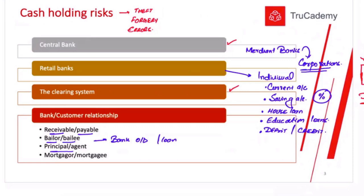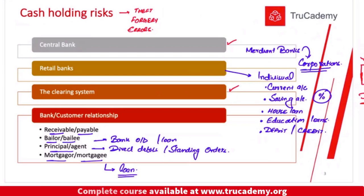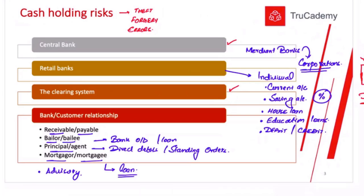The principal or agent relationship: sometimes I will give authority to my bank and the bank can perform transactions on my behalf — for example, direct debits or standing orders discussed in the previous chapter. In those transactions, the bank acts as our agent and we are the principal. Then there is the mortgager or mortgagee relationship: if we need a loan and have a property, we pledge a mortgage to the bank and in return the bank gives us the loan amount. Banks can also play an advisory role — offering pension planning, retirement planning, or insurance services to customers.